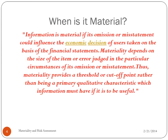When is something material? Information is material if its omission or misstatement could influence the economic decisions of a user taken on the basis of the financial statements. So it has to be significant — for example, a $3,000 misstatement for Walmart is not significant. Materiality depends on the size of the item or error judged in the particular circumstances of its omission or misstatement, providing a threshold or cutoff point rather than being a primary qualitative characteristic.